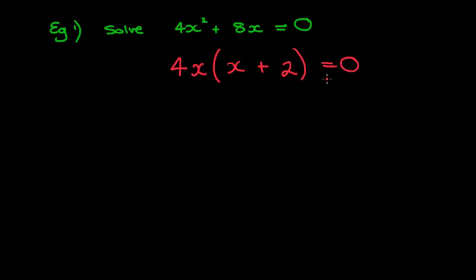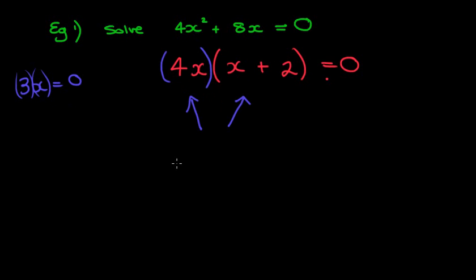We looked at the concept that 3x equals 0 means x must be 0. Likewise here, we have 4x times x plus 2 equals 0. In order for this to equal 0, we know one of these two brackets has to equal 0 — that's the only way multiplying them together gives 0. So how do we know which one? We don't, so we cover both cases.